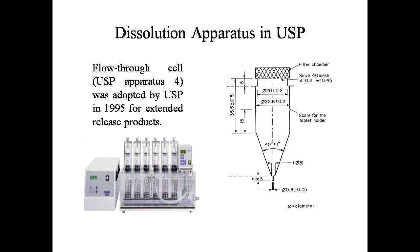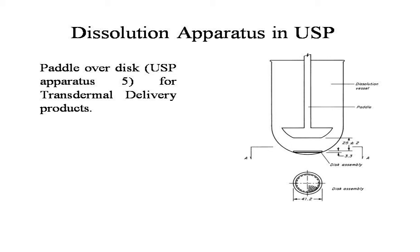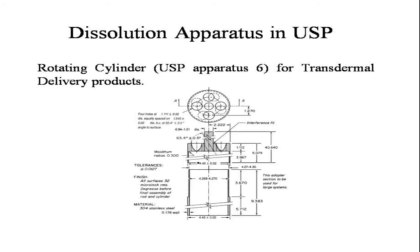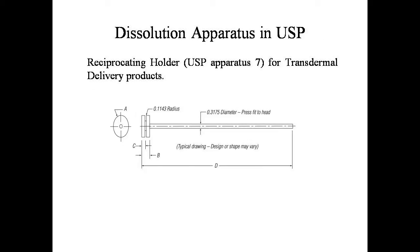USP Apparatus 5 is the paddle over the disc, used for transdermal delivery products. USP Apparatus 6 is the rotating cylinder, also for transdermal delivery products. USP Apparatus 7 is the reciprocating holder, likewise for transdermal delivery products.